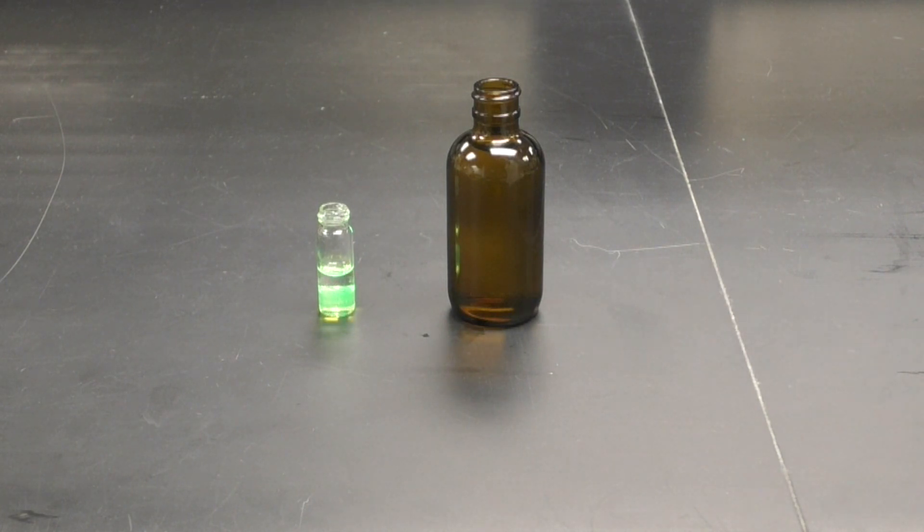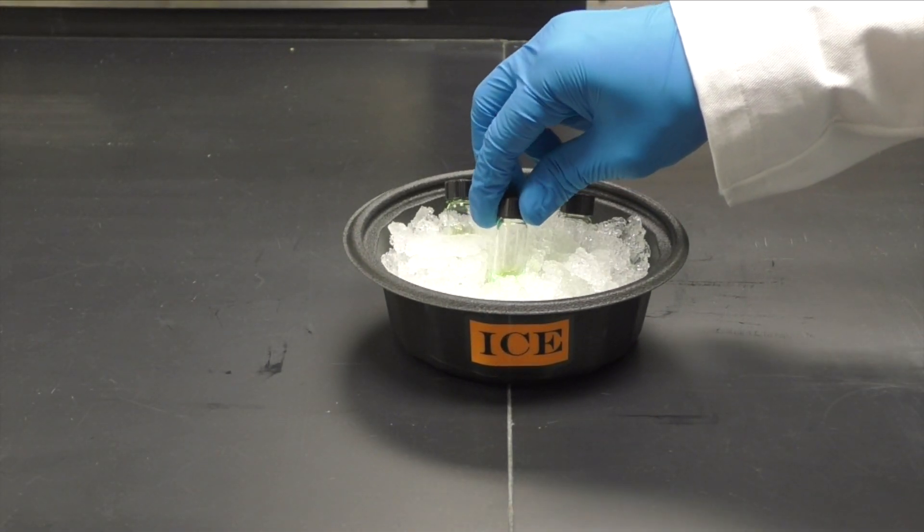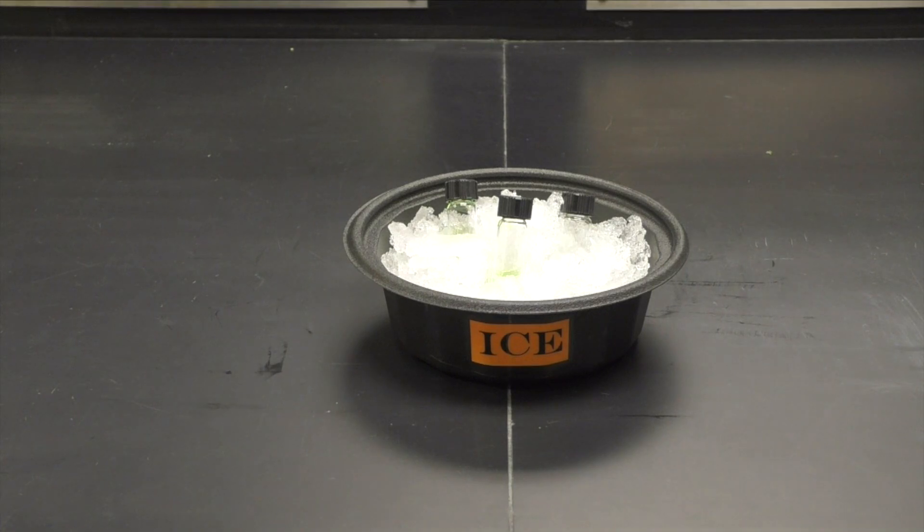If you plan to change the temperature of your glow stick solution, you will do so using an ice bath or a hot water bath. To cool your solution, place your capped 1 dram vials directly into a bowl of ice.